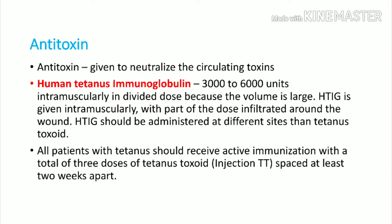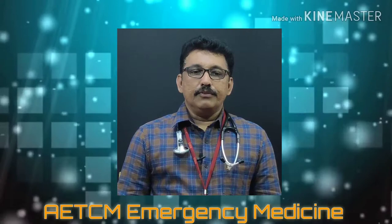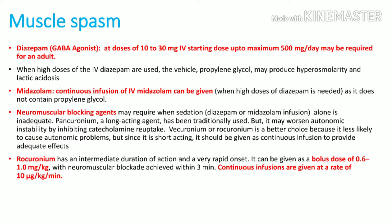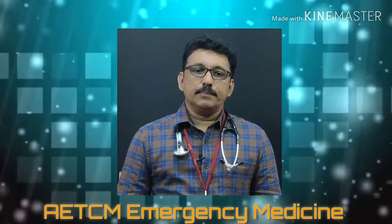All patients who develop tetanus should receive active immunization with tetanus toxoid (TT) injections — the first dose on admission and the second dose after two weeks. For controlling muscle spasm, diazepam is the best drug (a GABA agonist), with a starting dose of 10 to 30 mg IV and a maximum of 500 mg in adults. Midazolam can be used as an infusion alternative. Neuromuscular blocking agents such as rocuronium can also be given.